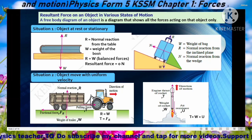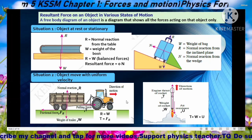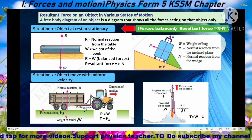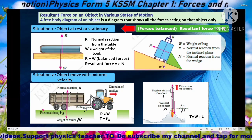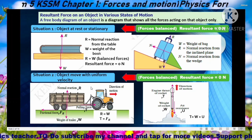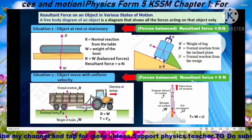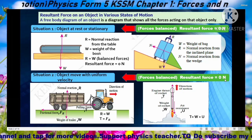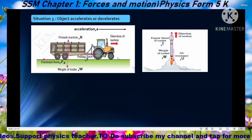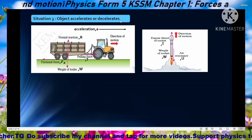So for both cases — object at rest and object moving with uniform velocity — forces are balanced and resultant force equals zero. Now look at Situation 3, where the object accelerates or decelerates.